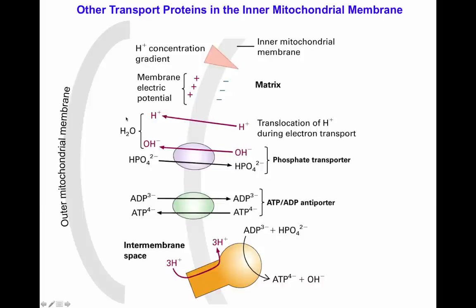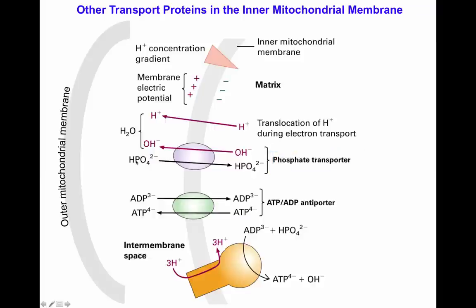Protons are translocated across the membrane during electron transport by the subunits of the electron transport chain. In order to make ATP, you need phosphate, which can come from the cytoplasm of the cell. It can translocate across the outer mitochondrial membrane through a porin, and then must be translocated across the inner membrane by a phosphate transporter. The phosphate transporter allows the import of phosphate with the concomitant exit of hydronium ions. ADP needs to come inside the matrix, whereas ATP needs to be exported for the cell to use, mediated by an ADP-ATP antiporter molecule.